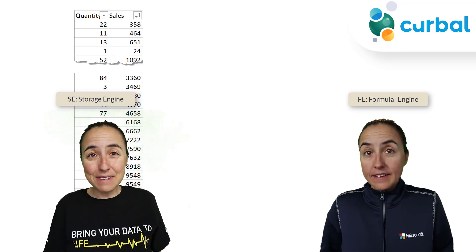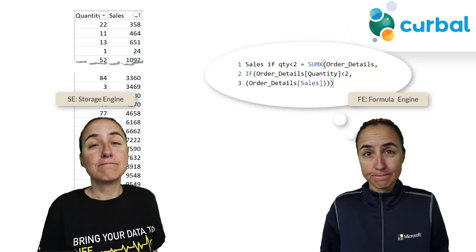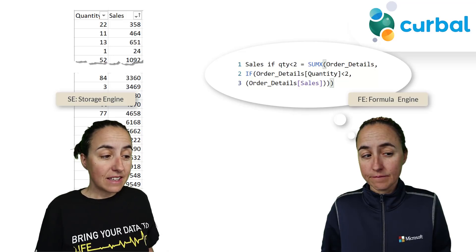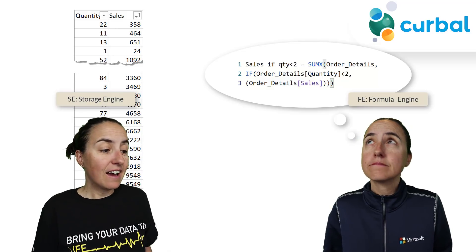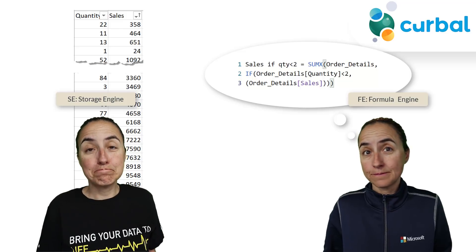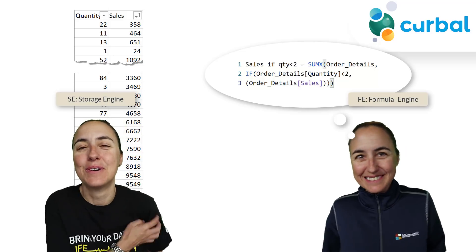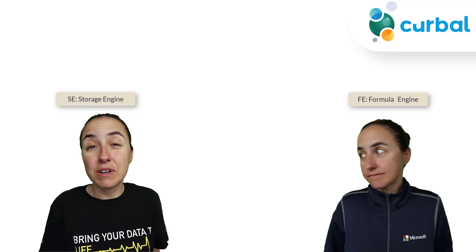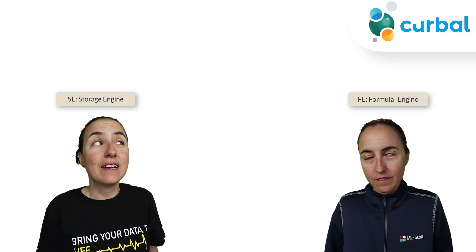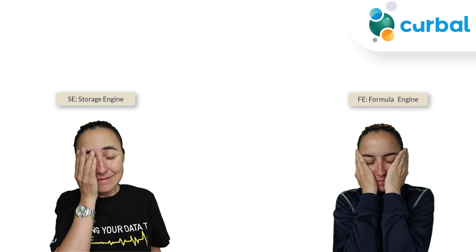Be prepared. Do you have any result for quantity 22, sales 358? No. Do you have any result for quantity 11, sales 464? No. Do you have any result for quantity 13 and sales 651? No. Do you have a result for quantity 1, sales 24? 24. As you can see, I have to call the formula engine to solve the query for me — I just send them the data. That makes it slower because the formula engine is slower than me. There are 3 million rows in this data set — this is going to take us forever.